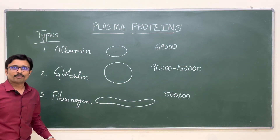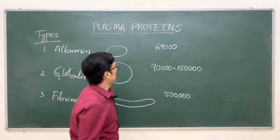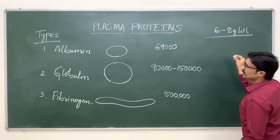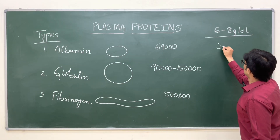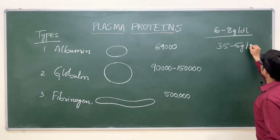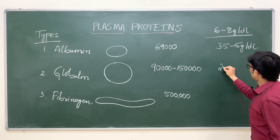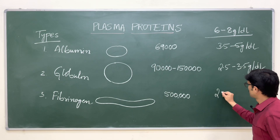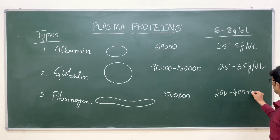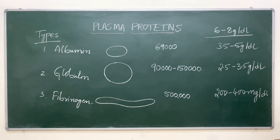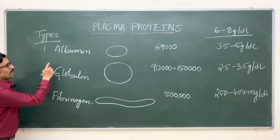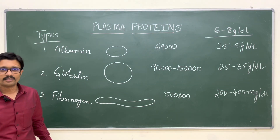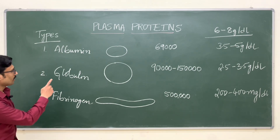Now let us see the concentration of these plasma proteins. The total plasma protein concentration is around 6 to 8 gram per deciliter. Albumin concentration is around 3.5 to 5 gram per deciliter. Globulins are around 2.5 to 3.5 gram per deciliter. So albumin is the least in molecular weight, but its concentration is the highest compared to all other plasma proteins.